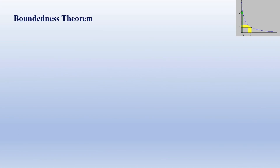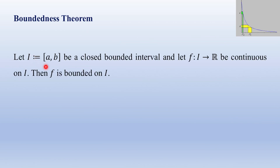Now we study the boundedness theorem. Let I = [a, b] be a closed bounded interval, and let f from I to ℝ be a continuous function on I. The boundedness theorem states that f is bounded on I. In other words, any continuous function on a closed bounded interval is always bounded.